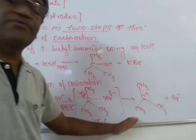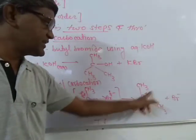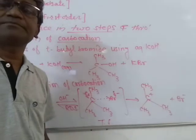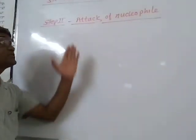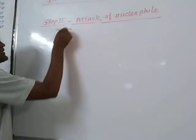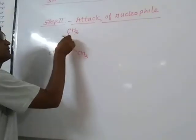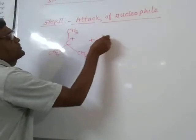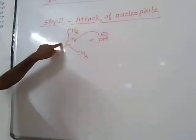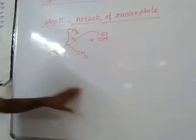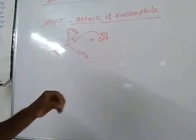Step 2 is the attack of the nucleophile on the carbocation. The nucleophile can attack from any side because this is a planar structure with bond angles of 120°. The nucleophile will attack on the tert-butyl carbocation from any side.